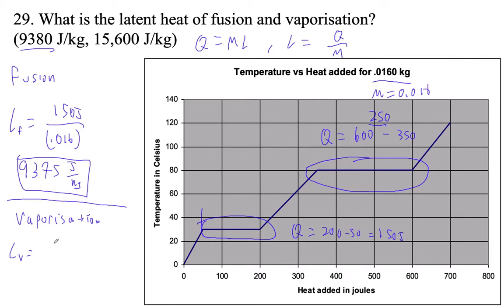And that's all we need. So 250 joules divided by 0.016 kilograms. 250 divided by 0.016 is 15,625 joules per kilogram.